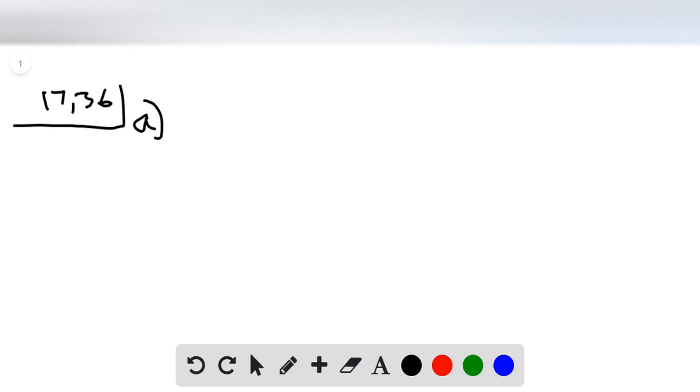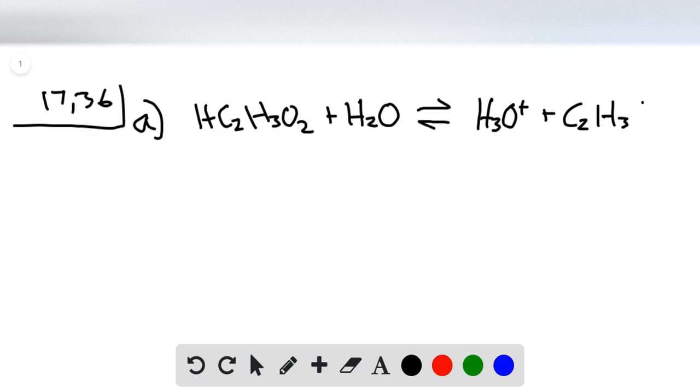In problem 28, it tells us that we have a solution of acetic acid and acetate. So we can go ahead and write the formula and equations here. We should have H3O+ since we're reacting with an acid. So this is our balanced equation.